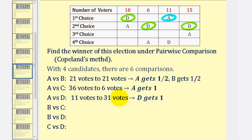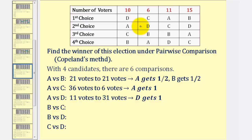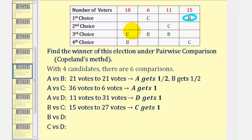For B versus C, we'll remove A and D from the table. B receives eleven plus fifteen, or twenty-six votes. C wins and C gets one point.